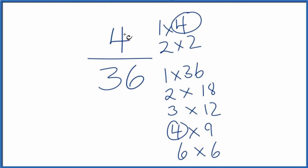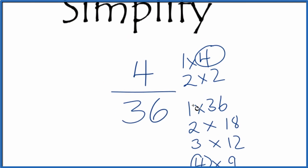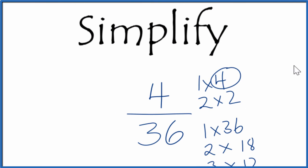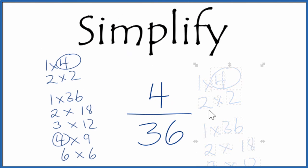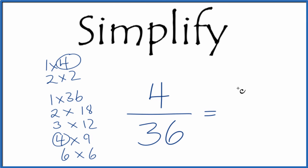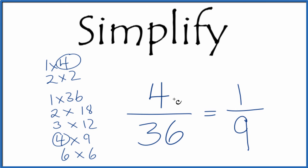So we divide 4 by 4 and 36 by 4 to simplify 4 over 36. 4 divided by 4 is 1, and 36 divided by 4 is 9. We end up with the same answer we got before: 1 ninth. So that's how you simplify 4 over 36 — you get 1 ninth.